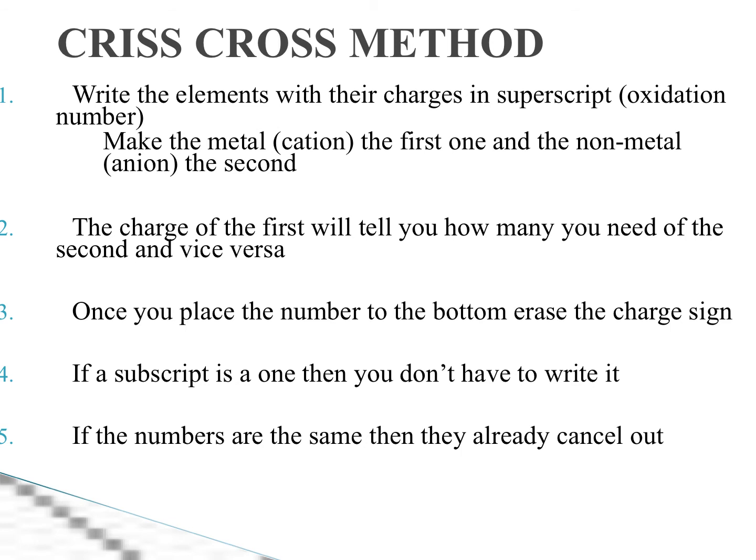Now this is a good method. Now it looks like a bunch of rules right here, but don't worry, we're going to practice it. And you're going to see that it's extremely easy to use. Rule one says you write out the elements with their charges in superscript. That means up in the air. So for a calcium, it'd be like calcium positive two. The metal goes first and then the nonmetal.